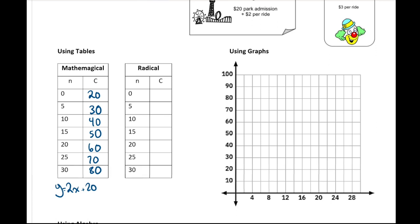For Radical Island, which charges $3 per ride, the equation is y equals 3x. There's no constant — or the constant is 0 — because we're not being charged anything to get in. So zero rides is $0, five rides at $3 per ride is $15, 10 rides is $30, 15 rides is $45, 20 rides is $60, 25 rides is $75, and 30 rides is $90.